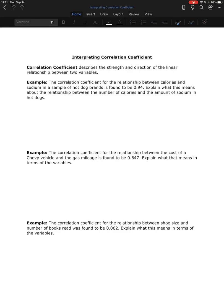Remember, the correlation coefficient tells us the strength and direction of a linear relationship. I have three examples here. The first example is looking at the relationship between calories and sodium in a sample of hot dog brands, and that correlation coefficient was found to be 0.94. So explain what this means about the relationship between the calorie count and the amount of sodium.